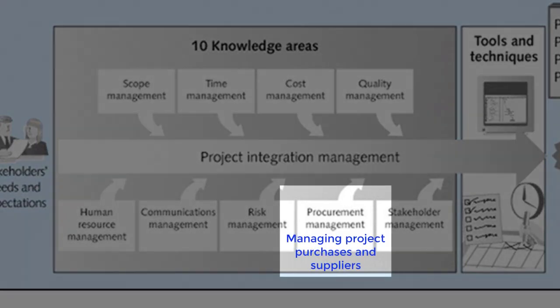Procurement is another word for purchasing or buying, and might also be considered supply chain management for a project. You may need to purchase equipment, expertise, or other products and services. Procurement management helps you identify and manage supply and suppliers. For example, on the renovation project you would need to procure kitchen cabinetry and appliances, tiling for the bathroom, wood for the deck, plus some tradespeople to do the work.